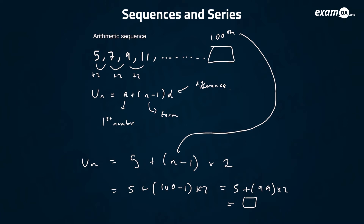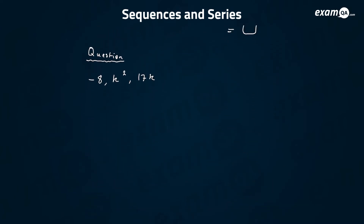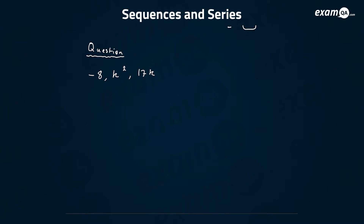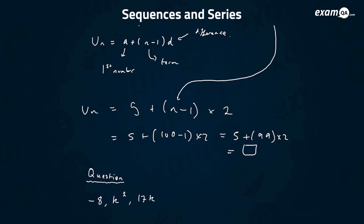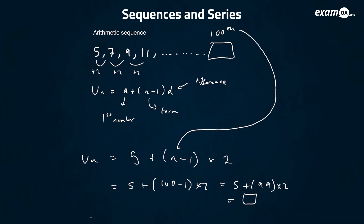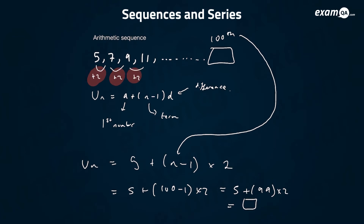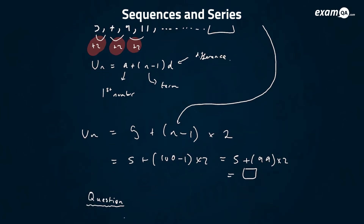So that's the basis of arithmetic sequences. Of course, they might give you a harder question like this — they might say this is an arithmetic sequence and ask can you work out what k is. Remember, arithmetic sequences always go up in constant numbers, and it's always the same number — it doesn't change, otherwise it wouldn't be an arithmetic sequence.